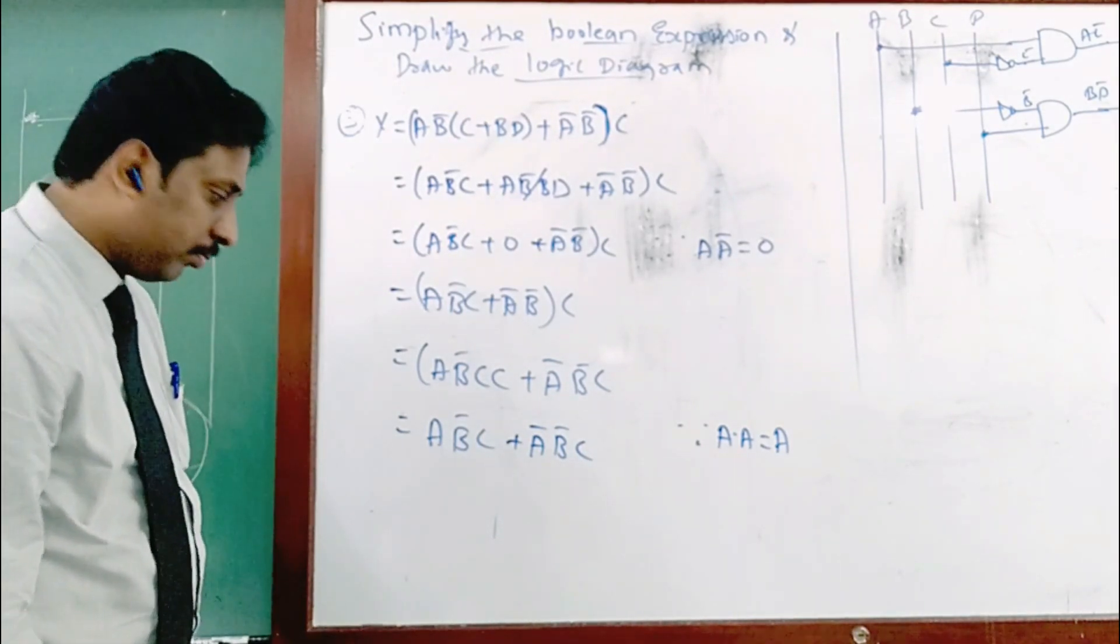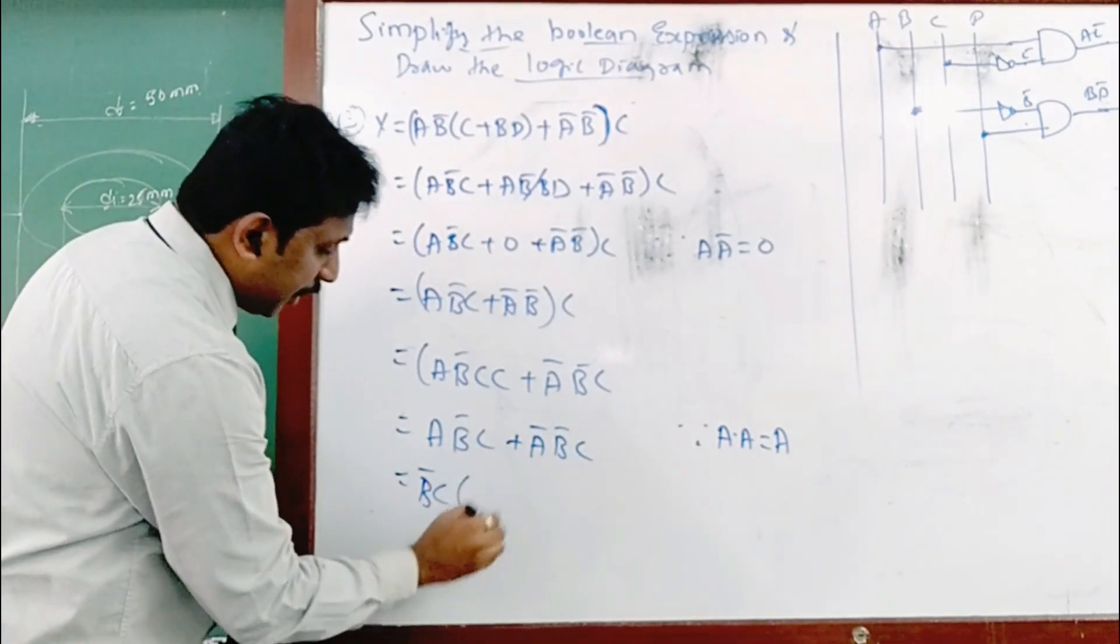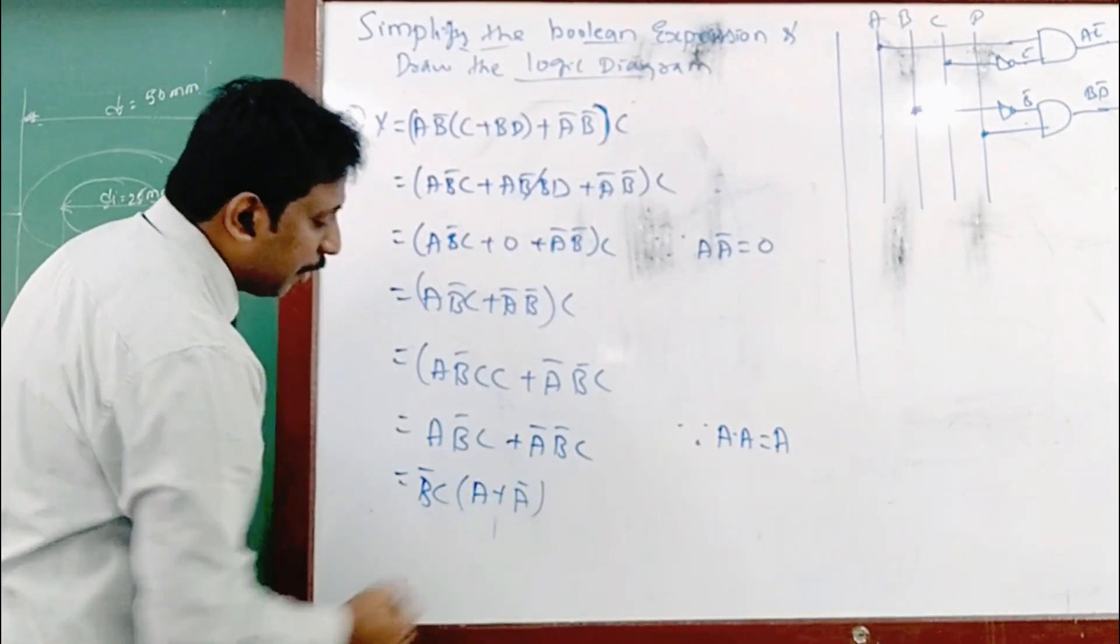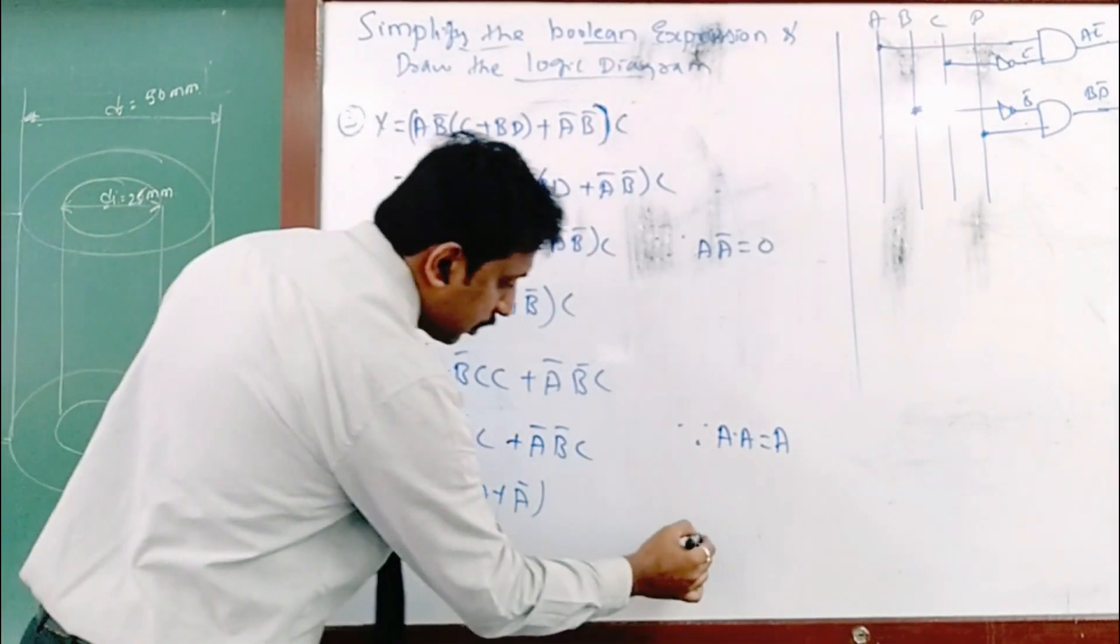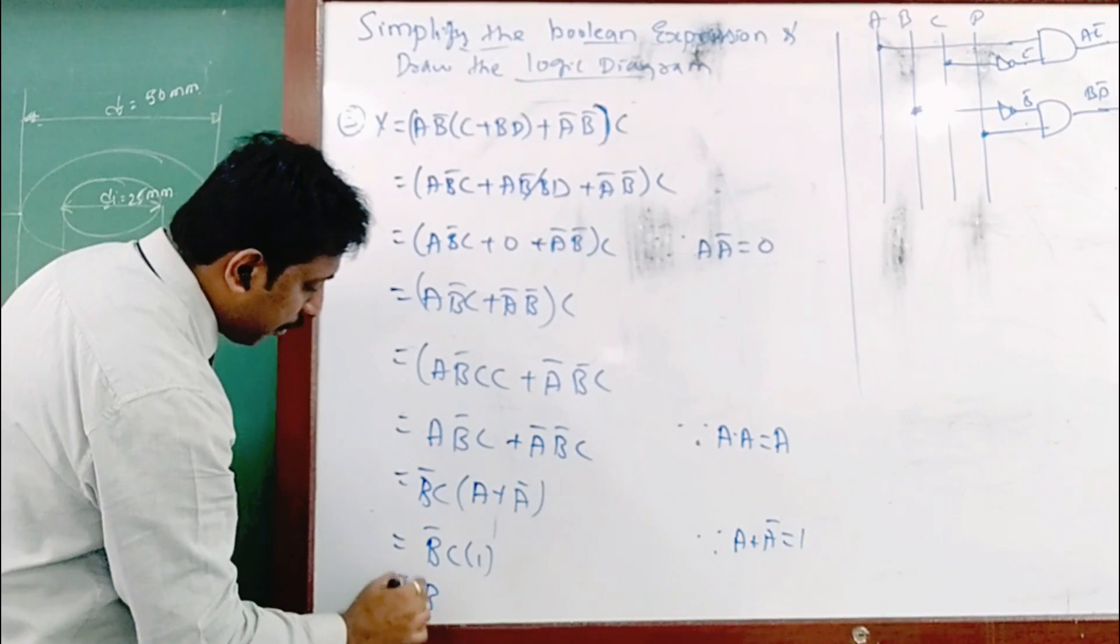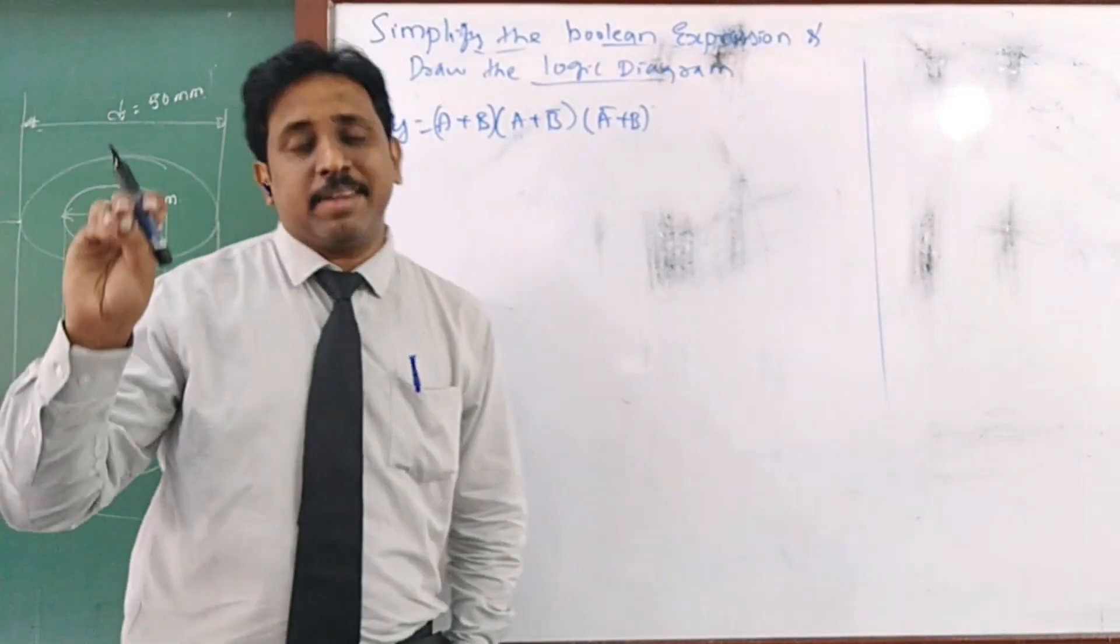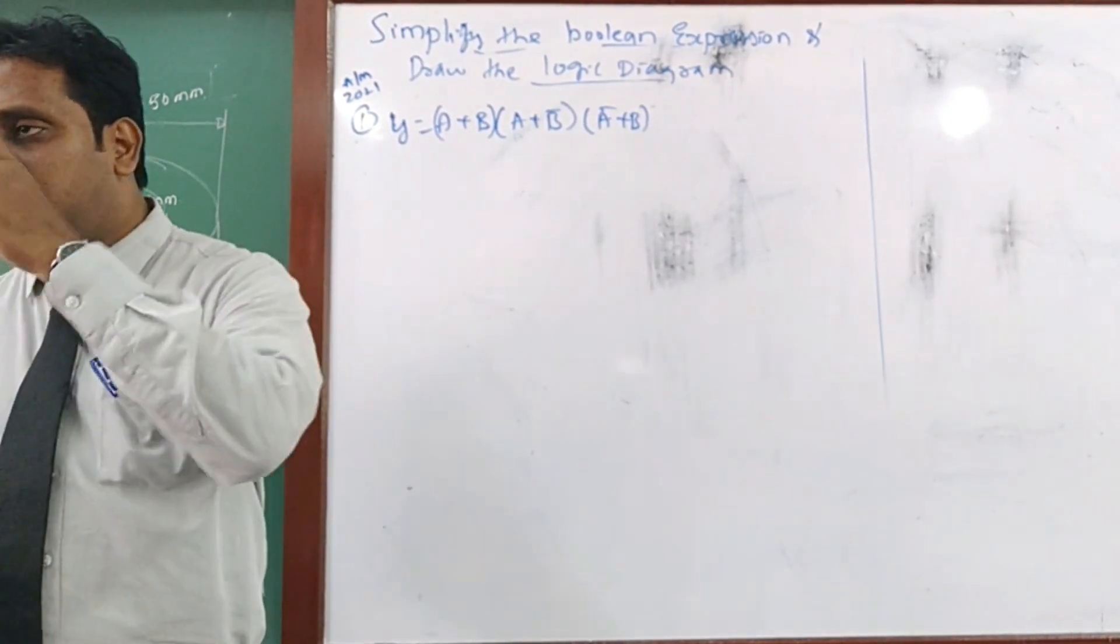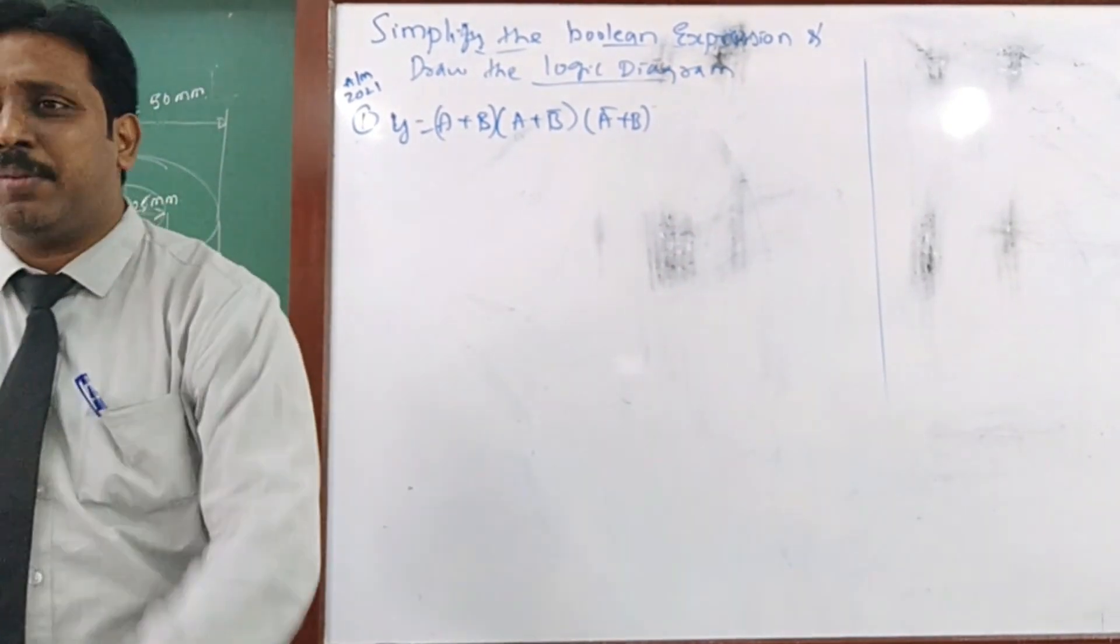So I will choose the next to a b bar c plus a bar b bar into c. So maximum I can do reduce. No bars, whole bar, only multiplication again multiply. That is called to a b bar c c plus a bar b bar c. So c bar. I can write like this a b bar c c plus a bar b bar c c, a b bar c because a into a is equal to a. So plus a bar b bar c. B bar c, b bar c. So final 5 marks simple, simple loss apply.